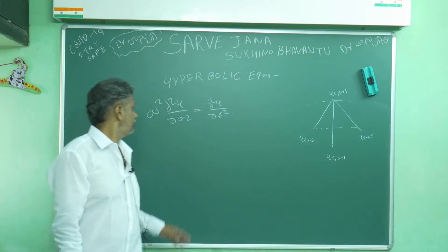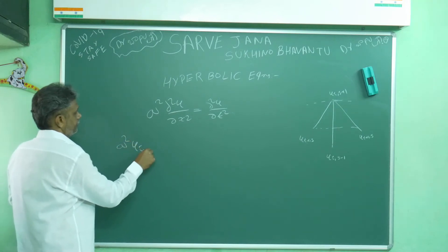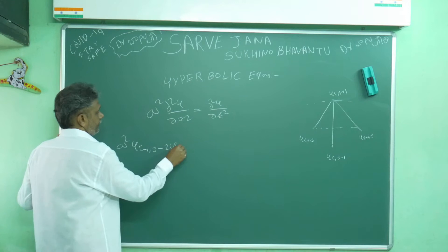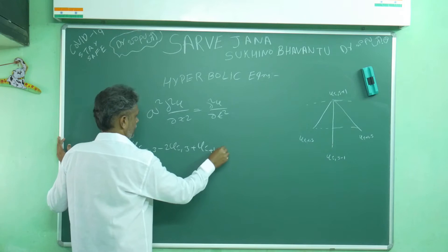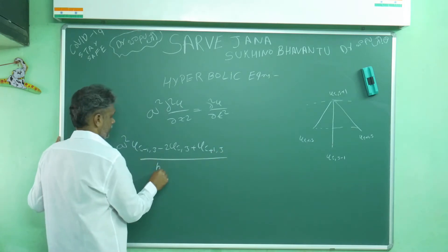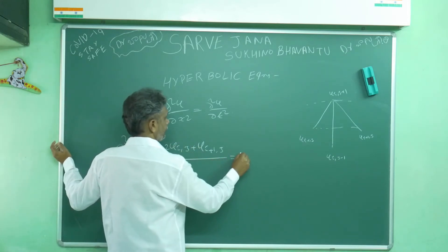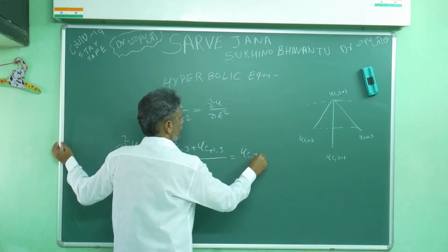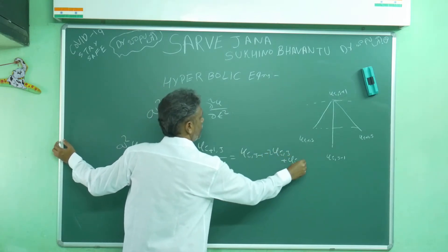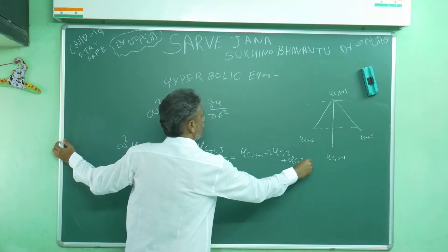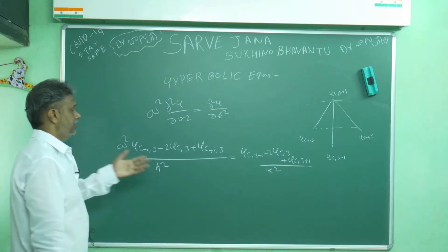Now we are familiar with the finite difference for ∂²u/∂x². The grid size in the x-direction is h and in the time direction is k. The central difference gives: (u(i,j-1) - 2u(i,j) + u(i,j+1)) / k².